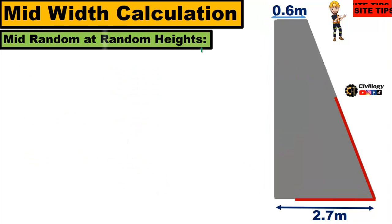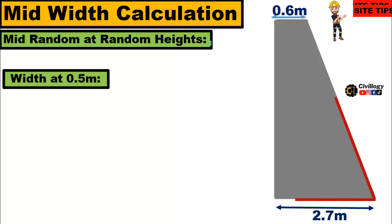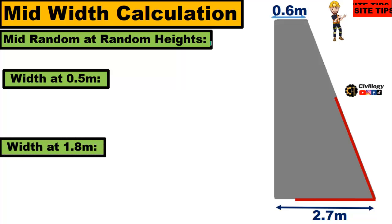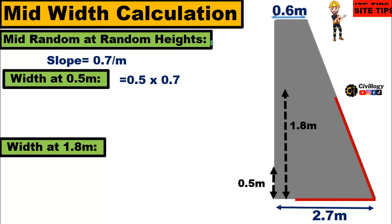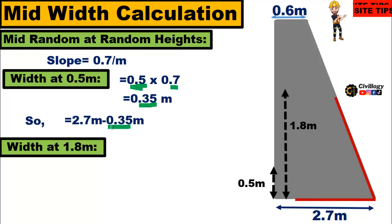Now let us calculate the widths at random heights. Suppose we calculate the width at 0.5 meter height. Since the slope is already calculated at 0.7, we will multiply the slope by the height at which we want to calculate the width: 0.7 multiplied by 0.5 gives a factor of 0.35. If you subtract 0.35 from the base of the toe wall of 2.7, it will be equal to 2.35 meters. So at the height of 0.5 meters, the width will be 2.35 meters.